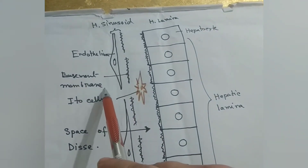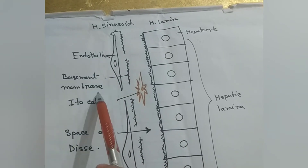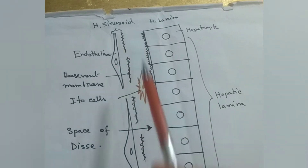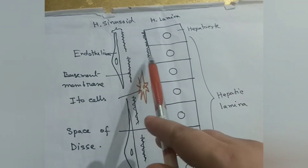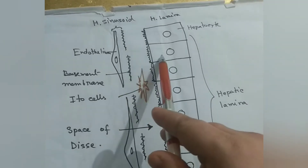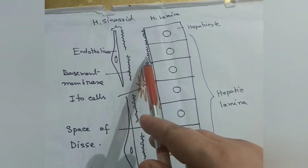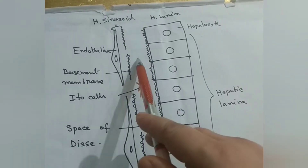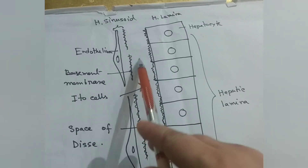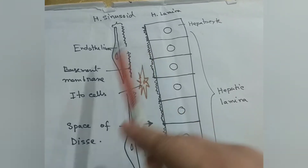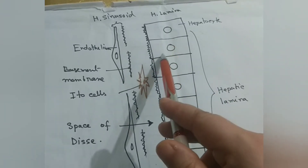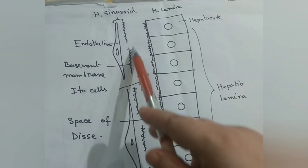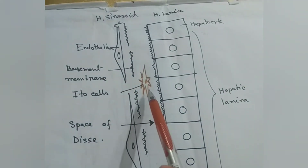The plasma of the blood from the hepatic sinusoid enters within the Space of Disse. Within the Space of Disse, the microvilli of the hepatocyte are also present. Due to the presence of microvilli, the hepatocyte easily absorbs the blood plasma, which contains the end products of digestion, and metabolizes them within the hepatocyte.